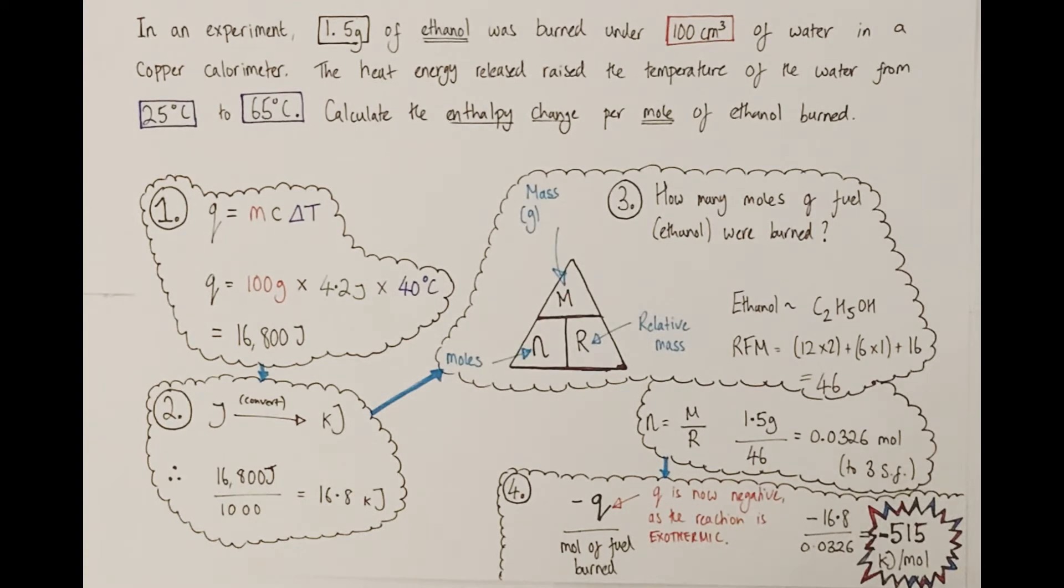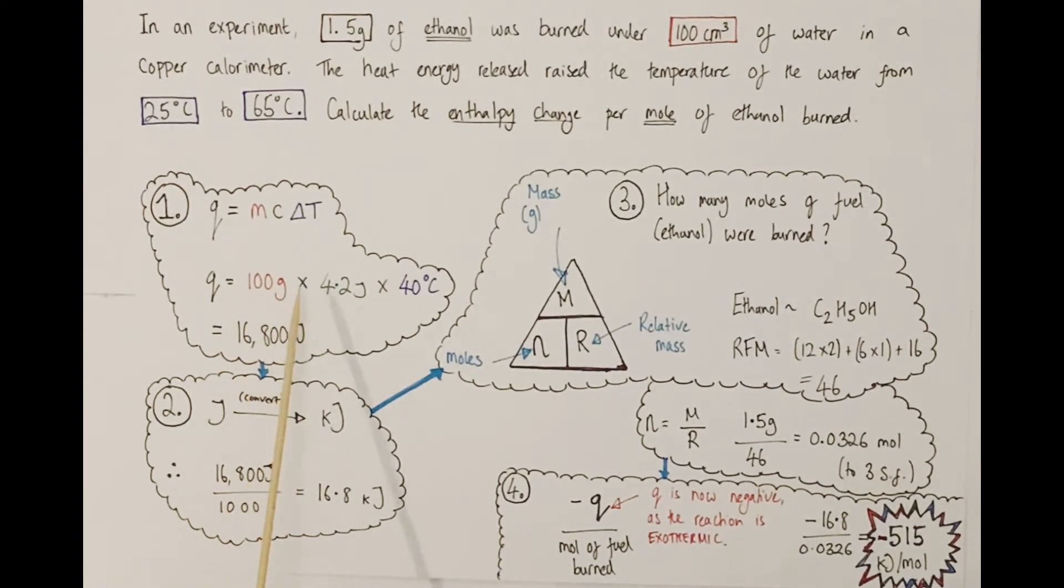You always start with the Q equals MC delta T calculation. I've highlighted that there was 100 centimeters cubed of water, therefore there was 100 grams of water, since the density of water is one gram per centimeter cubed. I've also highlighted that the temperature change was 25 to 65, therefore 40 degrees centigrade overall. So you would do M times C times delta T. 100 grams of water times 4.2, the specific heat capacity of that water, times 40, which is the temperature change, giving us an overall value of 16,800 joules of energy transferred.